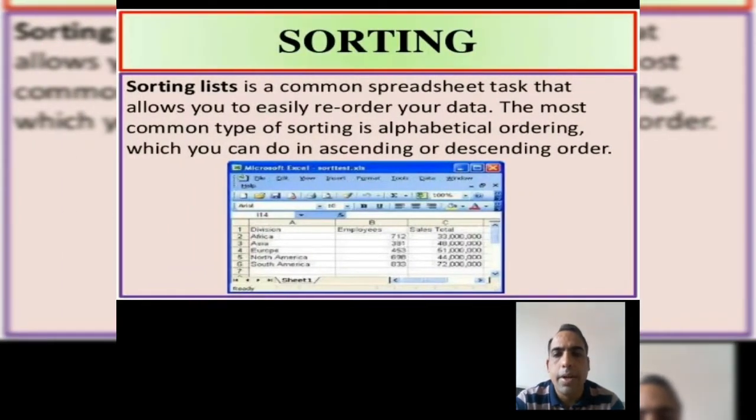Now I will explain what we mean by sorting. Sorting lists is a common feature of MS Excel that allows us to easily reorder our data. The most common type of sorting is alphabetical sorting, which we can do in ascending or descending order.